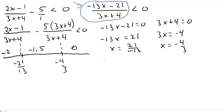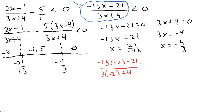Plugging negative 2 in: negative 13 times negative 2 minus 21 over 3 times negative 2 plus 4. The numerator is 26 minus 21, a positive number. The denominator is negative 6 plus 4, a negative number. Positive over negative is negative — so anything in this region is negative.